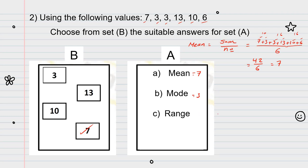Range means maximum minus minimum. What is the maximum here? Maximum means the largest number here, which is 13. And the minimum is 3. So, 13 minus 3 equals 10. So, the range here equals 10.